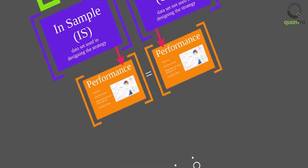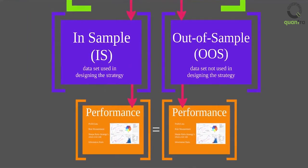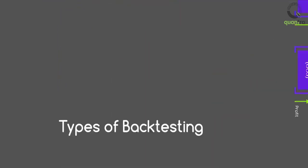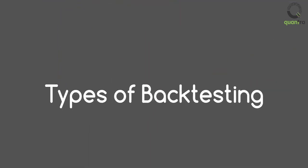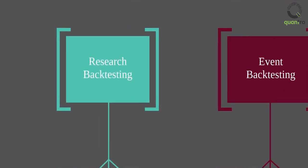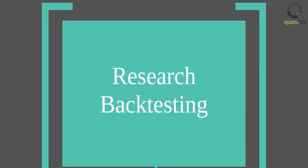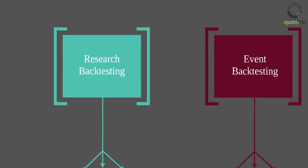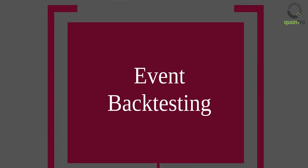A backtest is realistic when the in-sample performance is consistent with the out-of-sample performance. Backtesting can be divided into two categories: the first one is research backtesting and the second is event-driven backtesting.